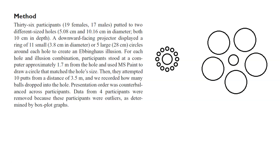They then attempted 10 putts from a distance of 3.5 meters and the researchers recorded how many balls dropped into the hole. Presentation order was counterbalanced across participants — sometimes they started with small circles around and sometimes with big circles, then swapped. Data from four participants were removed because they were outliers as determined by box plot graphs.